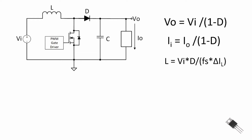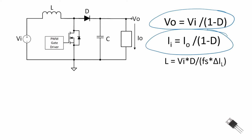Here are the input/output relationships derived in part one. The output voltage equals the input voltage divided by (1 − D), where D is the duty cycle. The input current equals the output current divided by (1 − D). Since D is between zero and one, the denominator is less than one, so output voltage is greater than input voltage. Likewise, output current is less than input current. Inductor sizing is based on input voltage, duty cycle, switching frequency, and allowable ripple current.